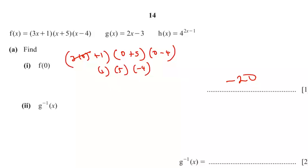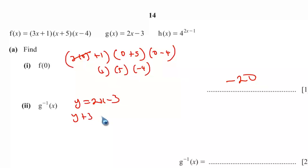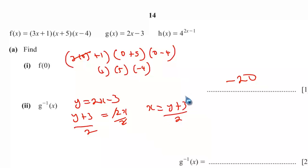Part ii: find g inverse of x. Let y equal g(x) equals 2x minus 3. Make x the subject: y plus 3 equals 2x, so x equals (y plus 3) over 2. Replace y with x and x with g inverse of x: g inverse of x equals (x plus 3) over 2.